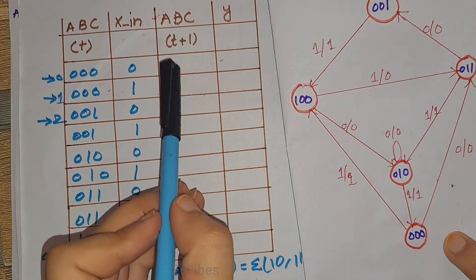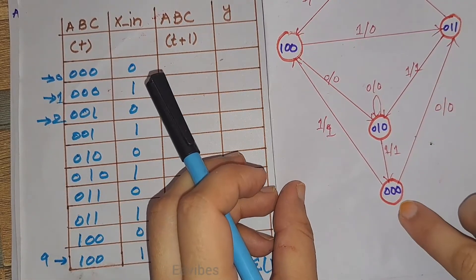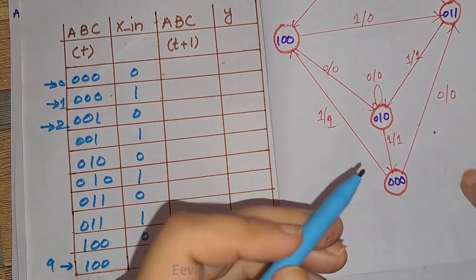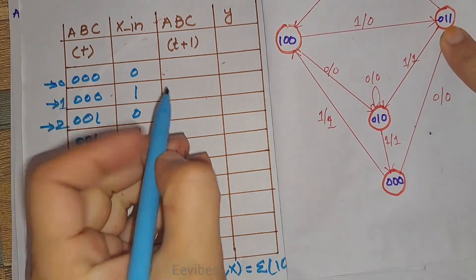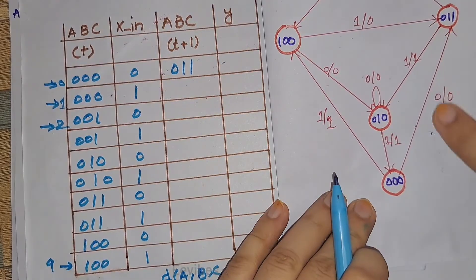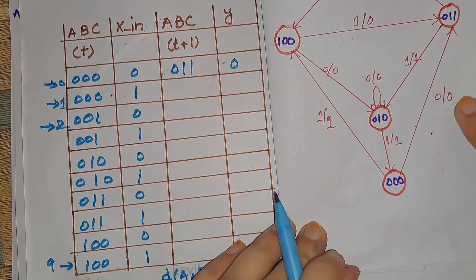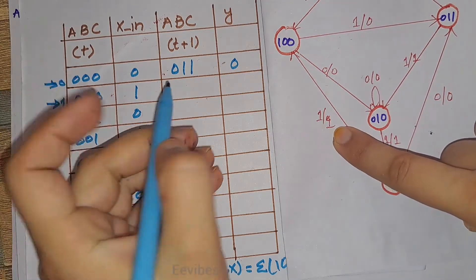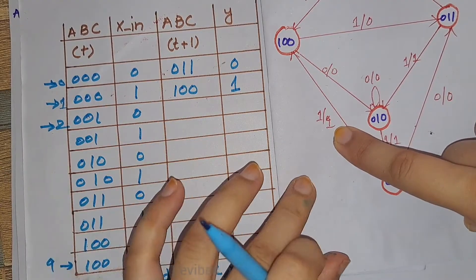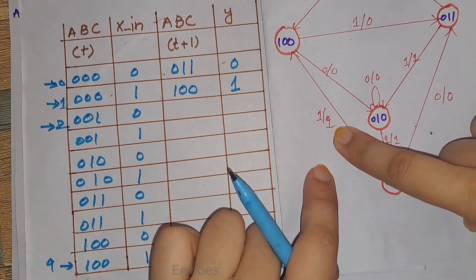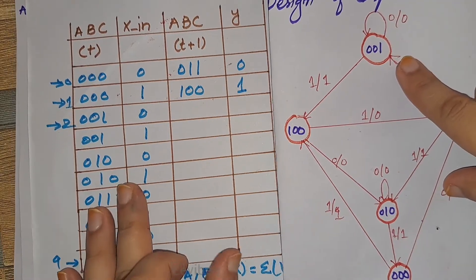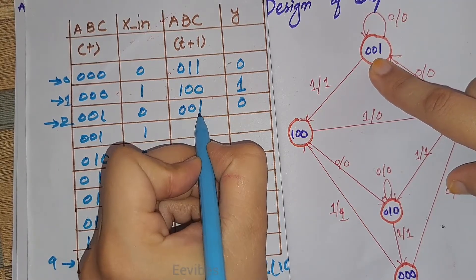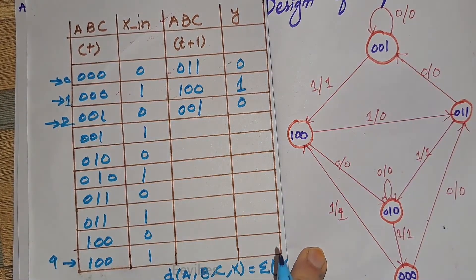To fill in the next state and output columns we take help from the state diagram. When we are in state 0-0-0 and input is 0, the next state is 0-1-1 and the output is 0. When we are in state 0-0-0 and input is 1, the output is 1 and the next state is 1-0-0. When we are in state 0-0-1 and input is 0, the output is 0 and we loop back to the same state.